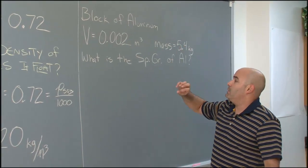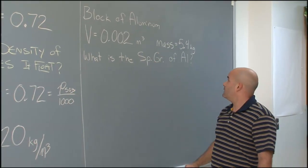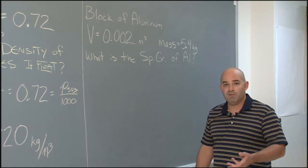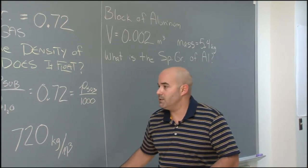Next. We have a block of aluminum. I made up a volume. I calculated the mass. And with this information alone, we should be able to find the specific gravity of aluminum. Let's see if it's just as easy as before.